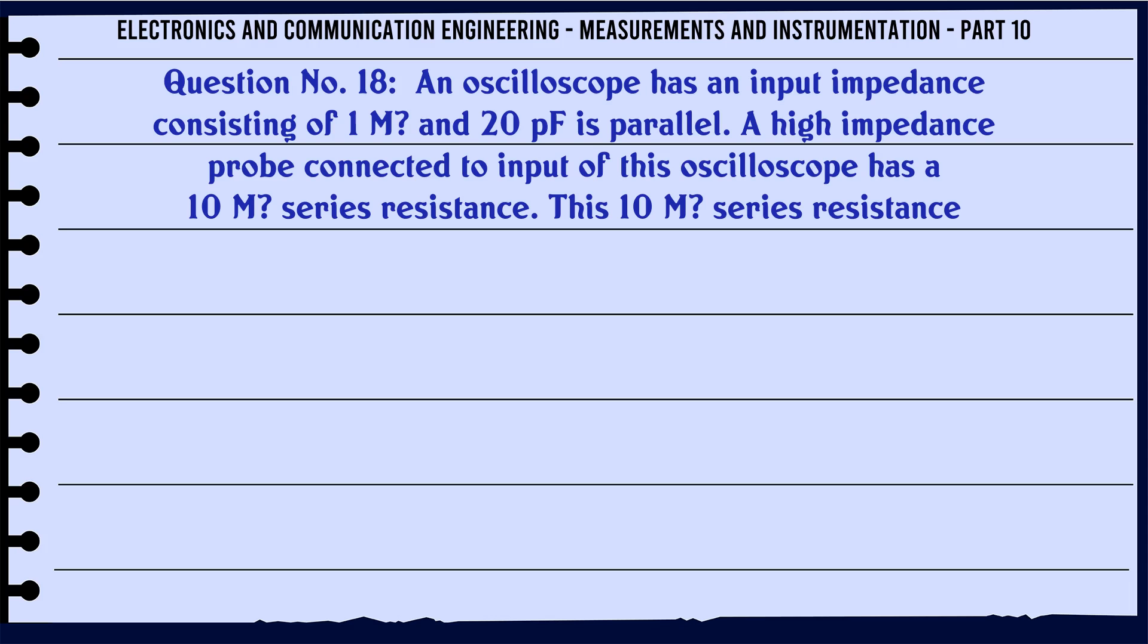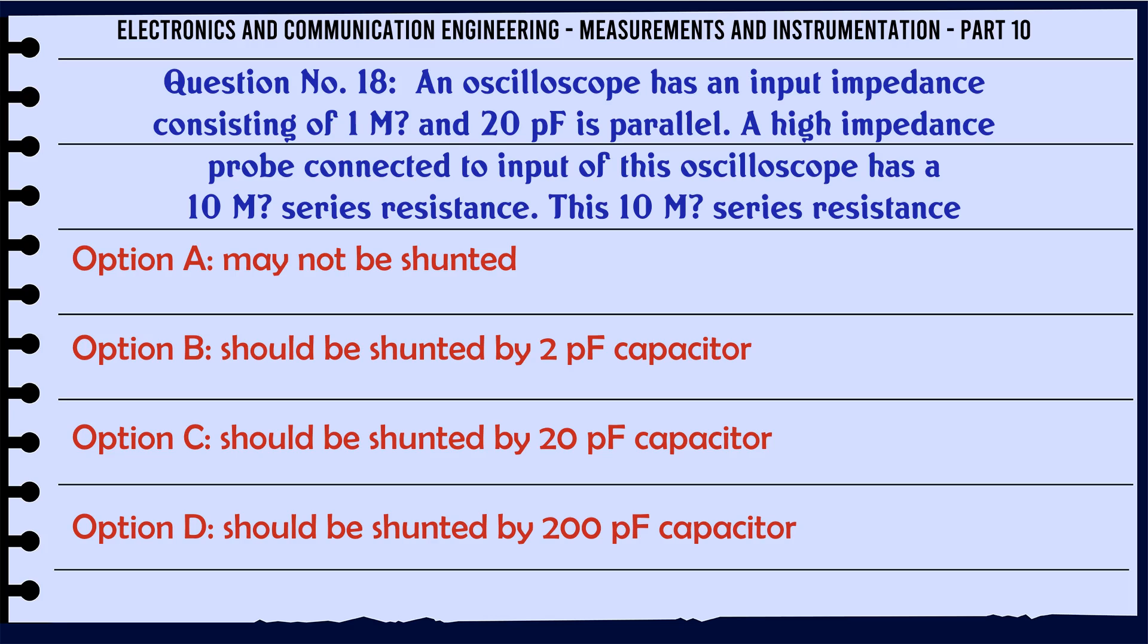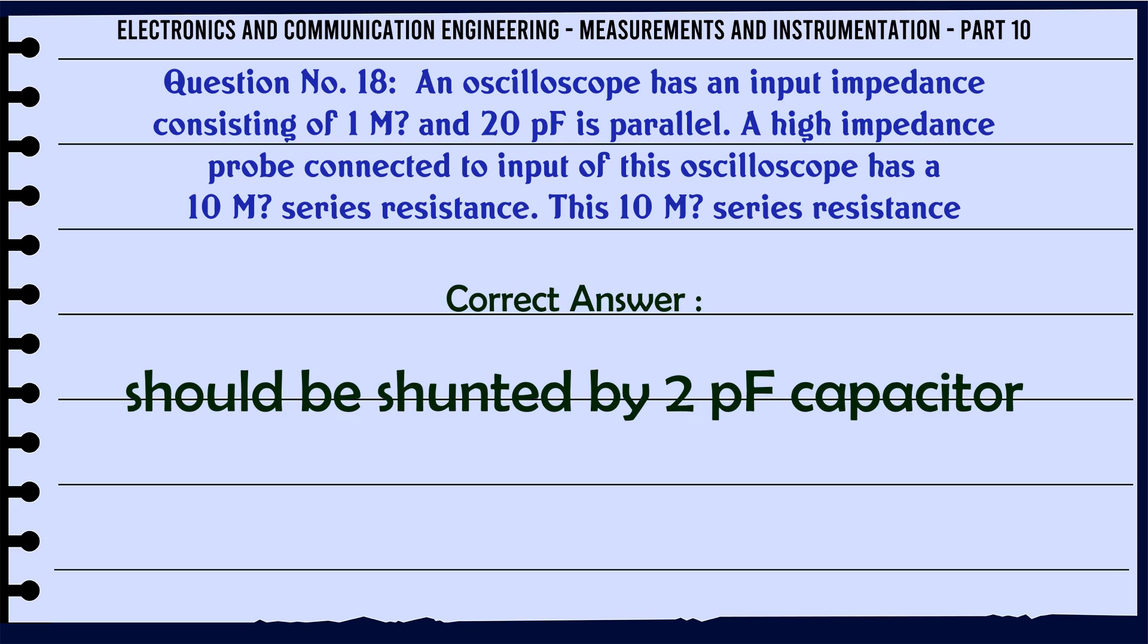An oscilloscope has an input impedance consisting of 1 MΩ and 20 pF in parallel. A high impedance probe connected to input of this oscilloscope has a 10 MΩ series resistance. This 10 MΩ series resistance: A) may not be shunted, B) should be shunted by 2 pF capacitor, C) should be shunted by 20 pF capacitor, D) should be shunted by 200 pF capacitor. The correct answer is should be shunted by 2 pF capacitor.